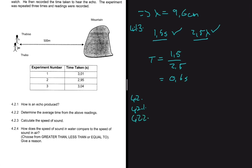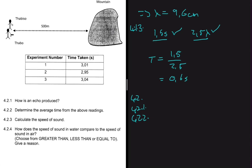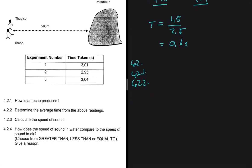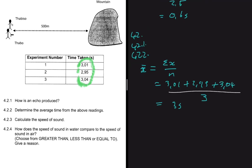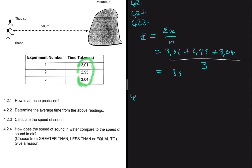4.2.2 asks us to determine the average time from the readings. The average is the sum of all values divided by the number of trials. We add 3.01, 2.95, and 3.04, then divide by 3, giving an average time of 3 seconds for sound to travel to the mountain and back.